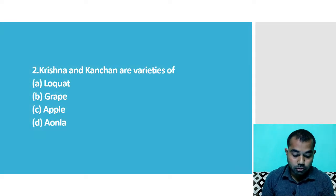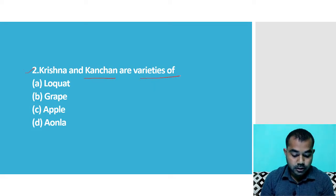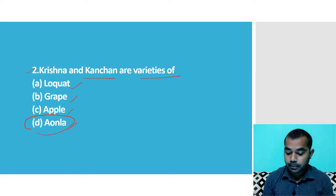The second question: Krishna and Kahnkwa are a variety of which plant? The four options given are Locard, Grape, Apple, and Aula. The right answer is Aula.